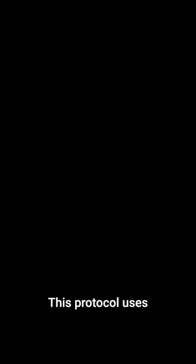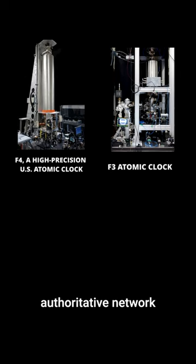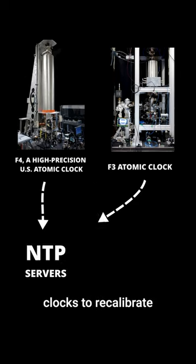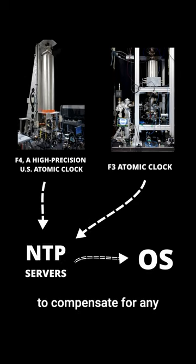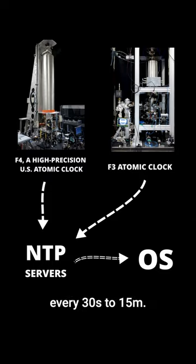This protocol uses authoritative network clocks to recalibrate and overwrite the RTC to compensate for any accrued drift, typically every 30 seconds to 15 minutes.